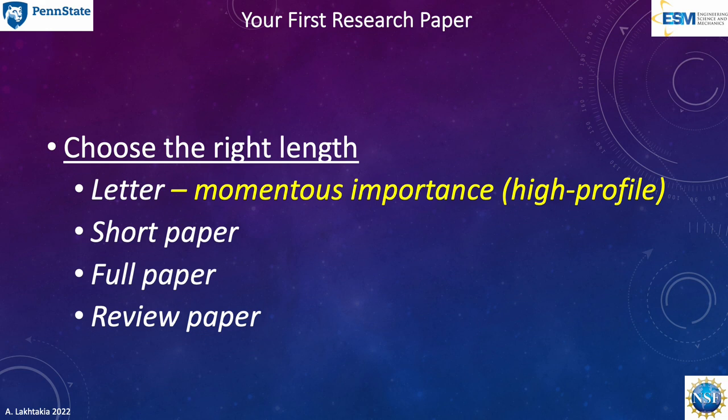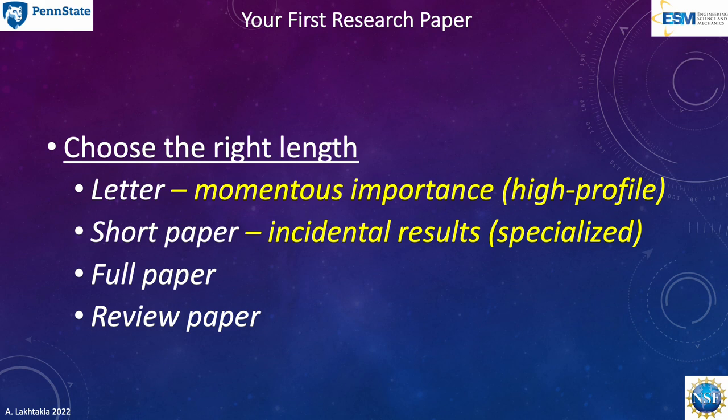Letters are written these days to announce a result of momentous importance. A letter should be published in as high-profile a journal as possible. Some journals contain only letters, which is evident from their names — Optics Letters and Physical Review Letters are examples. Short papers often contain incidental results or corollaries of important results. Only some details are provided in short papers, and these are often published in specialized journals. However, the boundary between letters and short papers is often blurred.